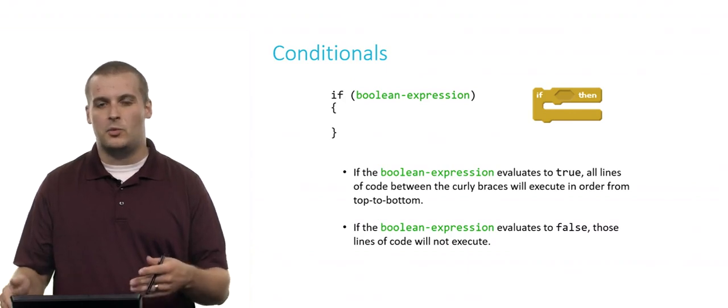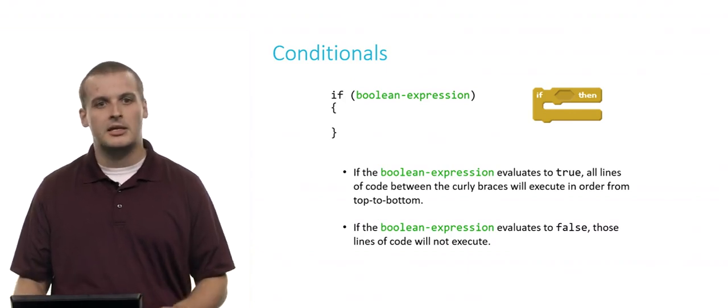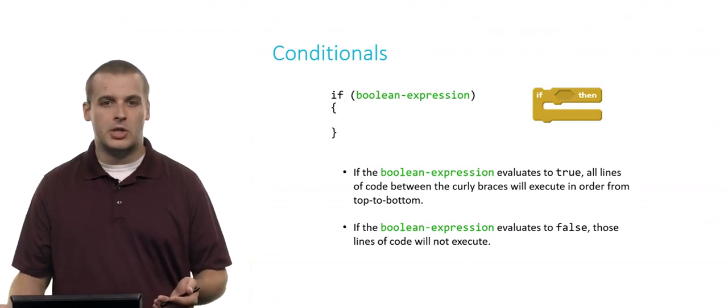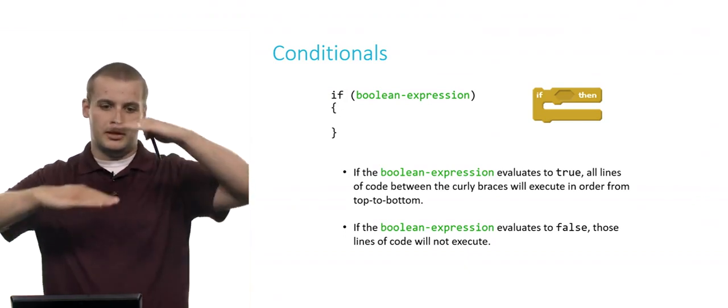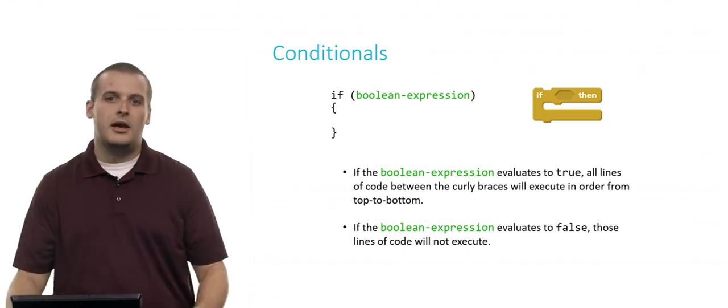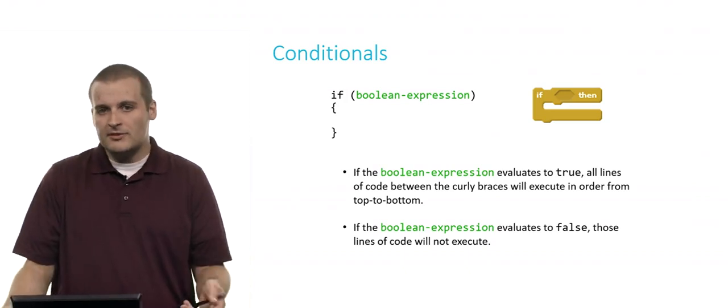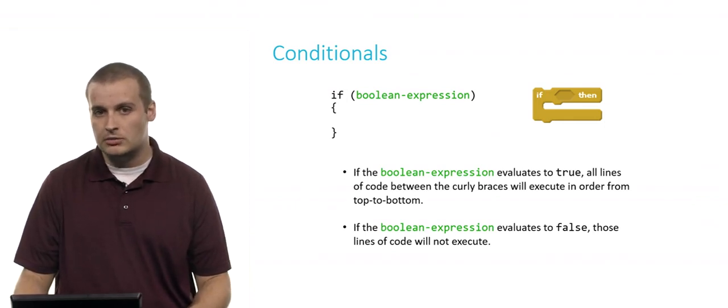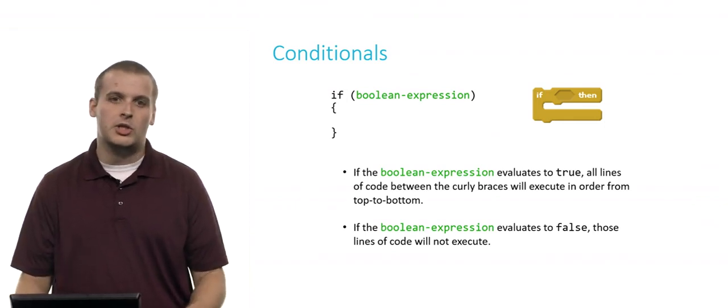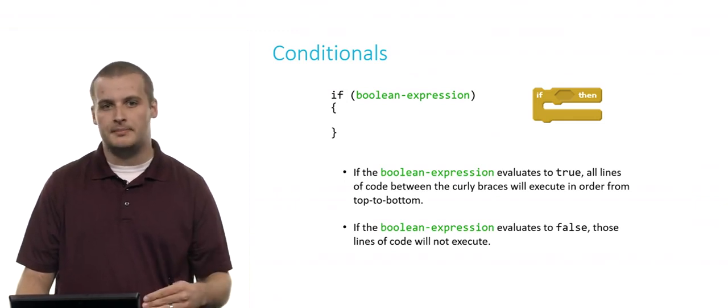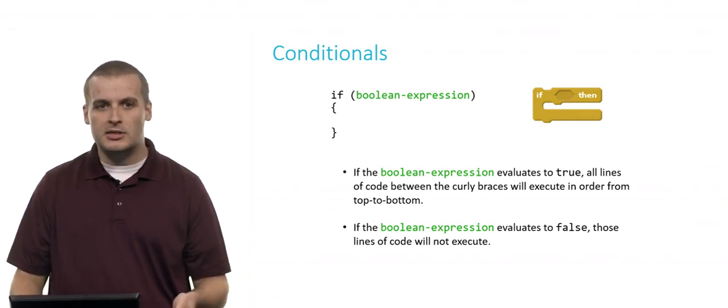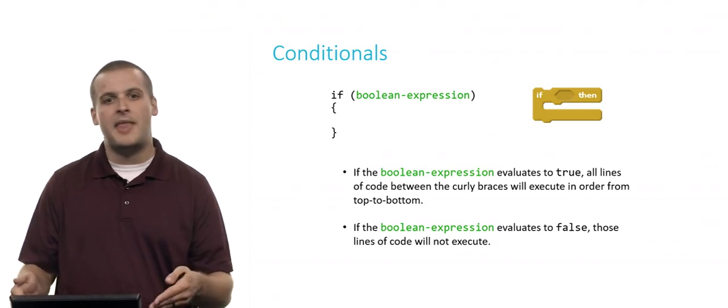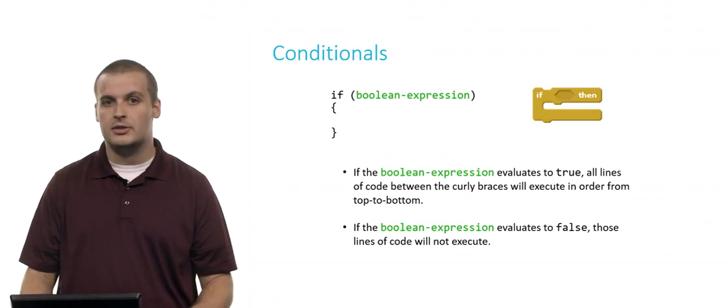Similarly, we have if on the left there—if Boolean expression, which I'm just using as a substitute for one of the Boolean expressions we've previously discussed, open curly brace, close curly brace. So think of open curly brace and close curly brace as sort of analogous to the sandwich effect of the if block on the right from Scratch. If the Boolean expression in the if statement is true, then all of the lines of code between the curly braces will execute in order from top to bottom. If the Boolean expression is false, we'll skip over everything in between the curly braces, because we only want to go down that fork in the road if the Boolean expression is true.